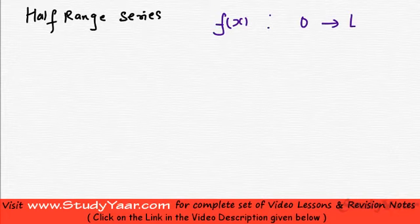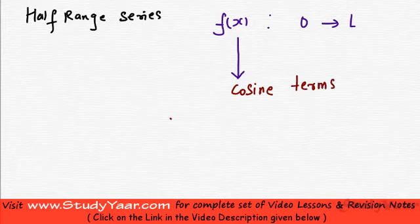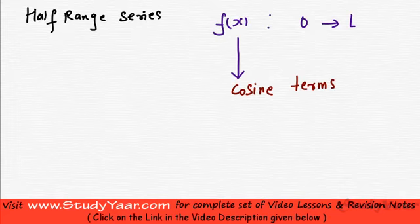What I want is, I want to get an equivalent series which gives me the value of this function at each point between 0 and L and which contains only cosine terms. So I am looking for an infinite series of cosine terms that is equivalent to this function between 0 to L. Let us see how we are going to find that series.